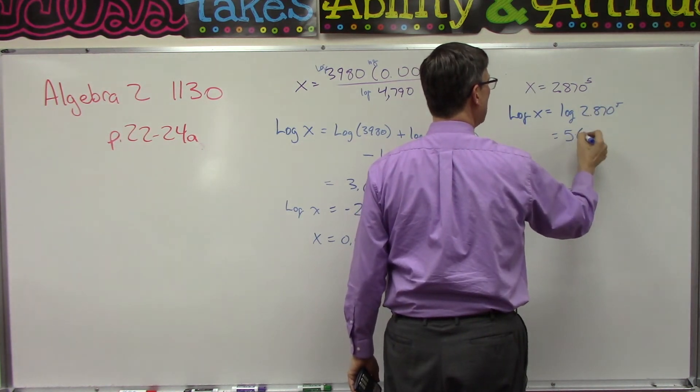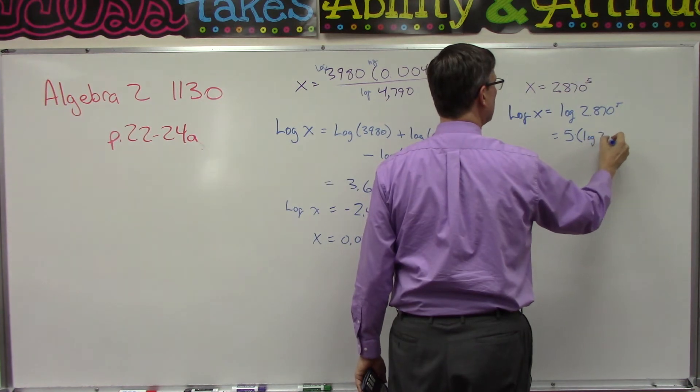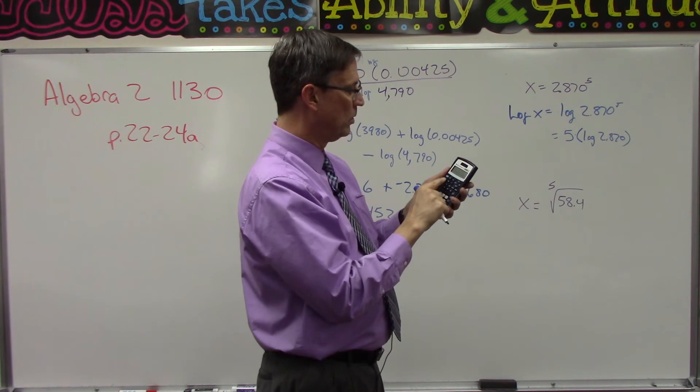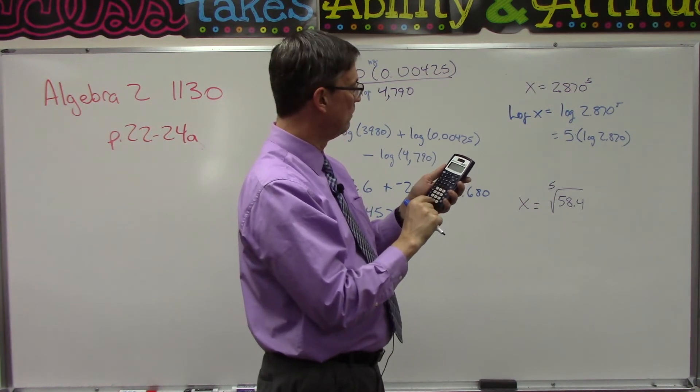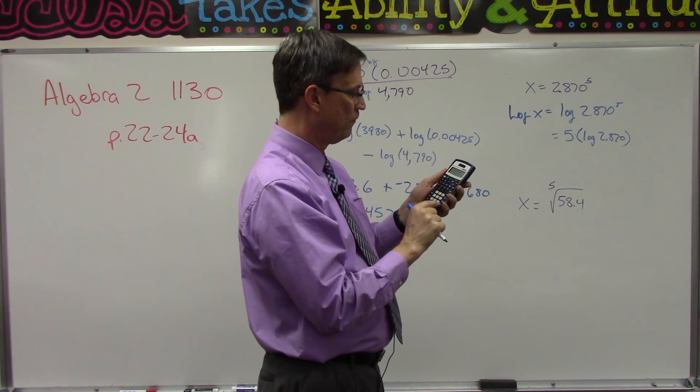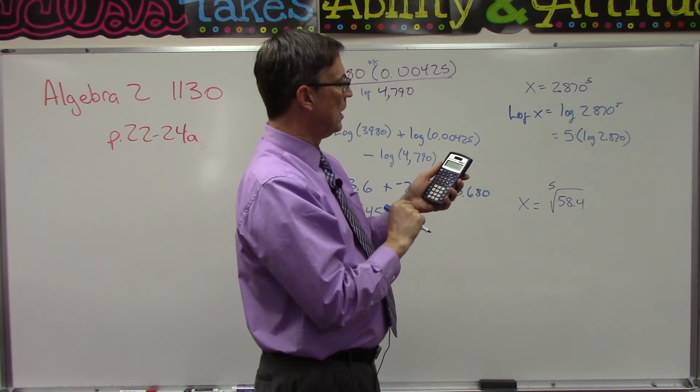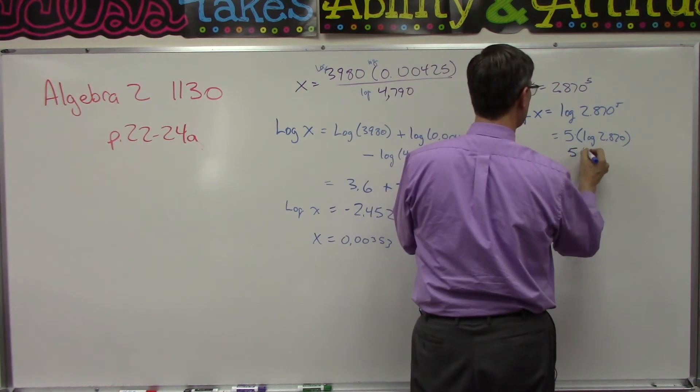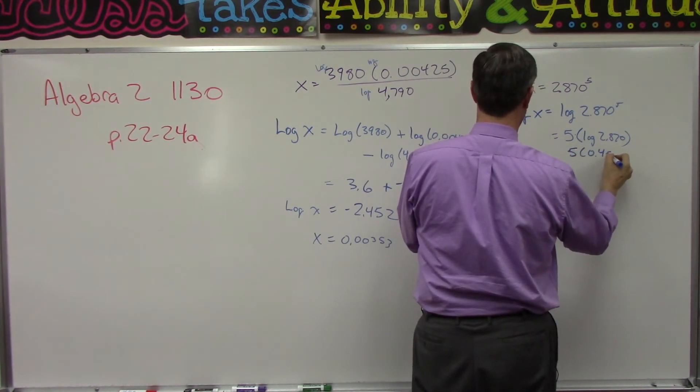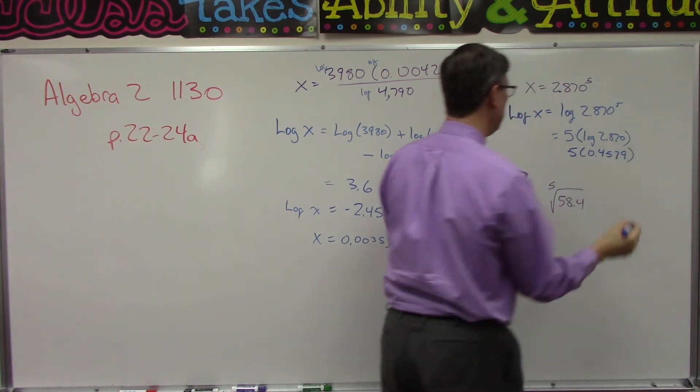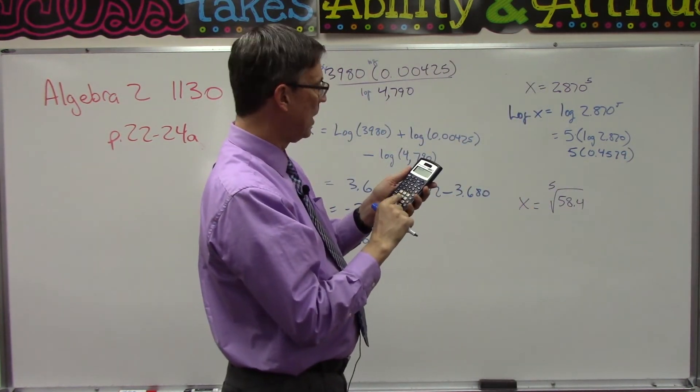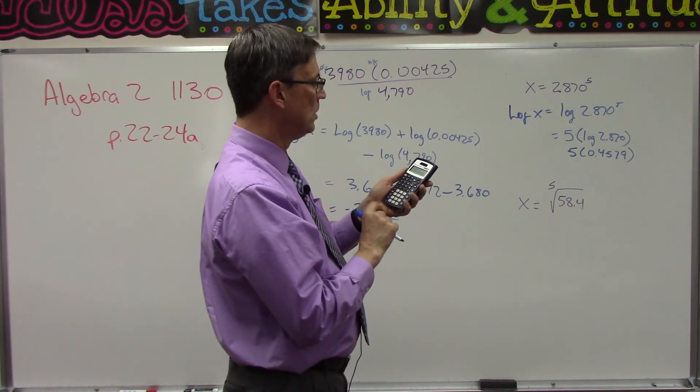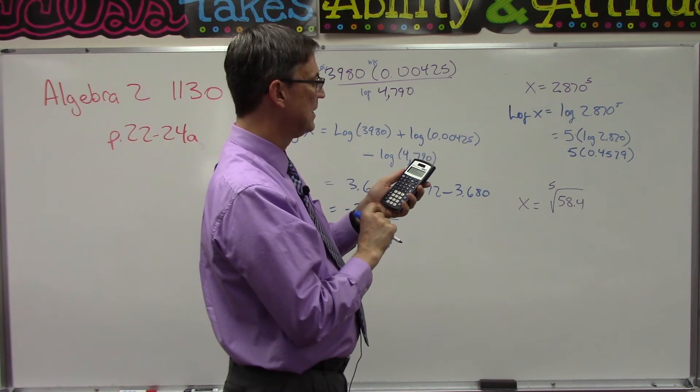So we can take our calculator, do the log of 2.870, and I get 0.4579. I'm going to take that times 5 and I get 2.2895.